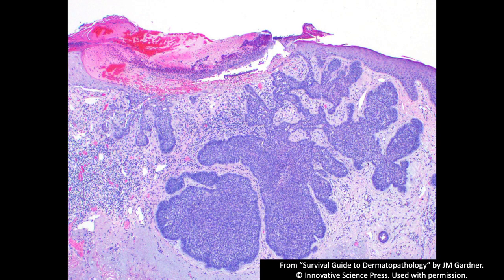Switching gears: not all that is basaloid is basal cell carcinoma. Just because it's basaloid and in the skin doesn't mean it's BCC. Here's a classic, obvious basal cell carcinoma — one of the first tumors learned in pathology. Blue nests of basaloid cells with nice peripheral palisading, a distinct fibrous and myxoid-looking stroma with inflammation, and sometimes clefting around the edge of the nest.